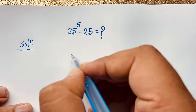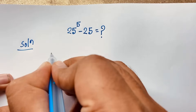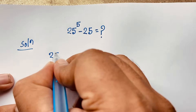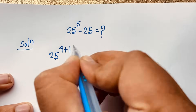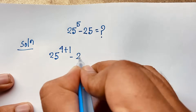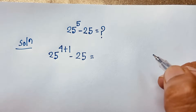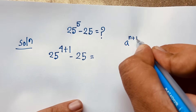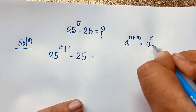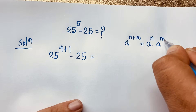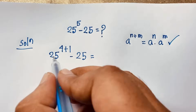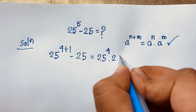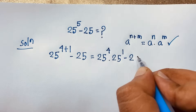So how do we evaluate this math problem without a calculator? I take the expression 25^5 and rewrite the exponent 5 as 4 plus 1, giving us 25^(4+1) minus 25. Using the exponential formula a^(n+m) = a^n × a^m, this becomes 25^4 × 25^1 minus 25.